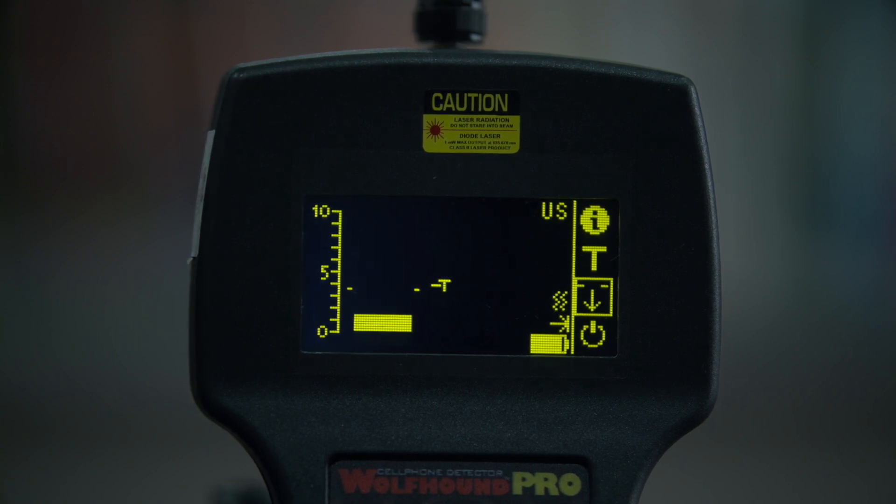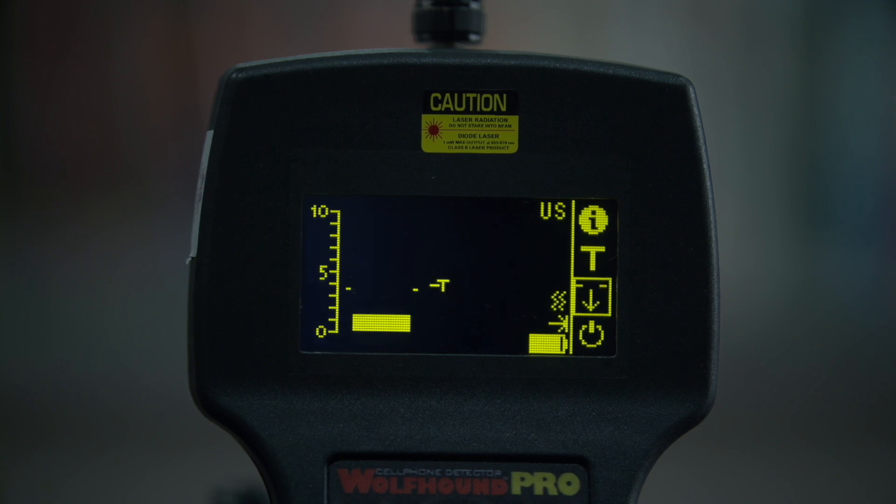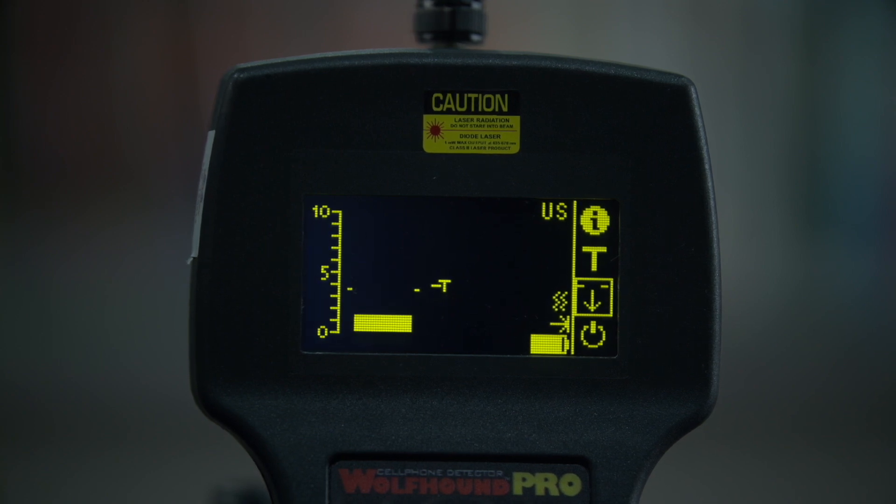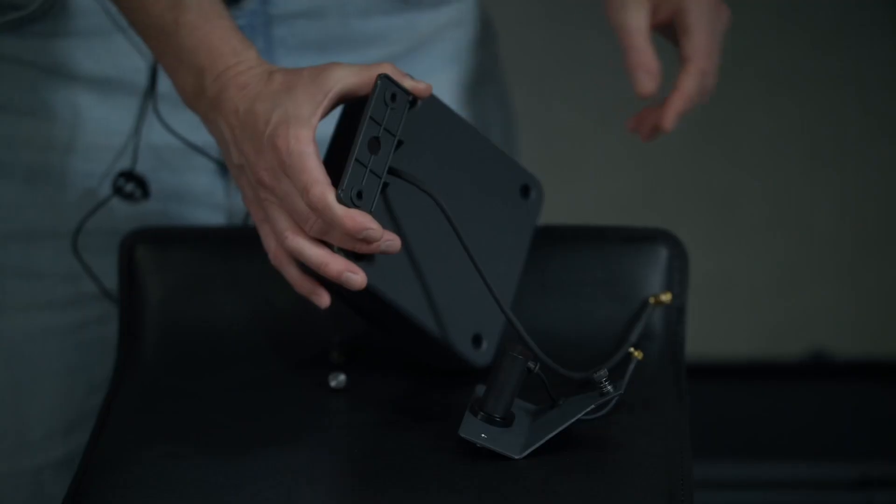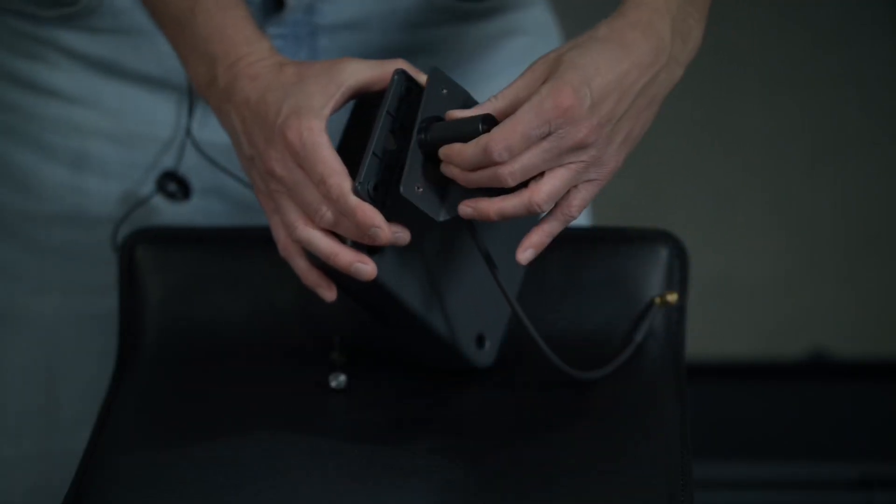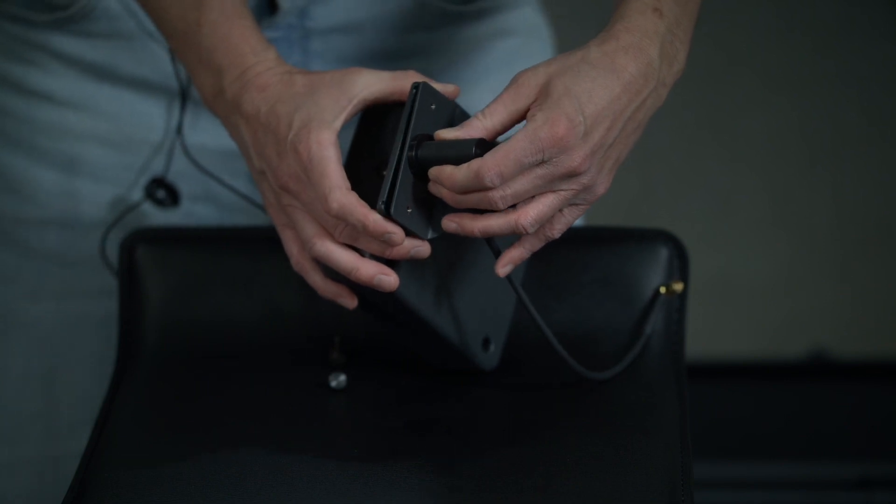The Wolfhound Pro comes with a direction-finding antenna. The metal bracket connects to the direction-finding antenna like this. Attach the antenna to the Wolfhound Pro. Now I'm going to attach the laser bracket to the DF antenna like this.